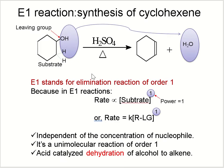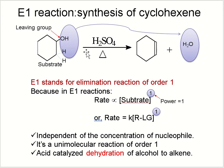The leaving group departs from the alpha carbon and the proton leaves from the beta carbon, forming water. These two adjacent alpha and beta carbons then form a pi bond, producing cyclohexene in the presence of sulfuric acid and heat.